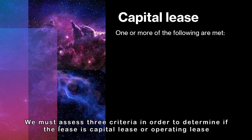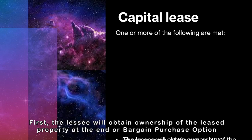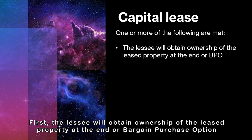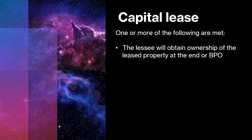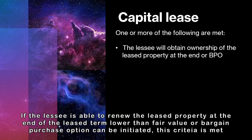We must assess three criteria in order to determine if the lease is a capital lease or operating lease. First, the lessee will obtain ownership of the leased property at the end, or a bargain purchase option. If the lessee is able to renew the lease property at the end of the lease term lower than fair value, or a bargain purchase option can be initiated, this criteria is met.